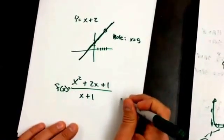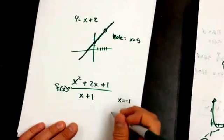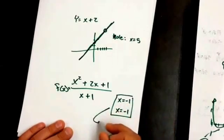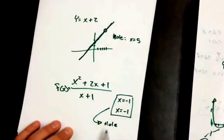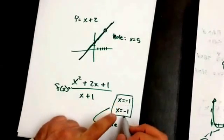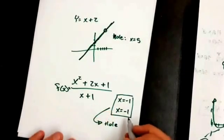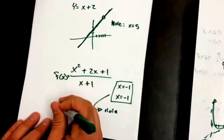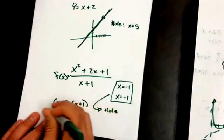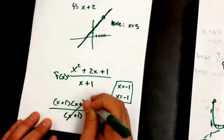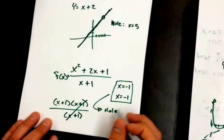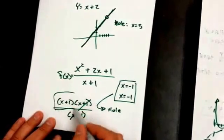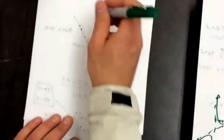How you get a hole is: this example has a zero at X equals negative 1 and also a vertical asymptote at X equals negative 1. When the zero and the vertical asymptote are the same, they become a hole. So you no longer have a zero at negative 1 and you no longer have a vertical asymptote at negative 1 — what you have is a hole at negative 1. They cancel each other out. You can see that happen when you factor: it becomes X plus 1 over X plus 1, and these cancel. Whatever sets the cancelled part equal to zero is the hole.